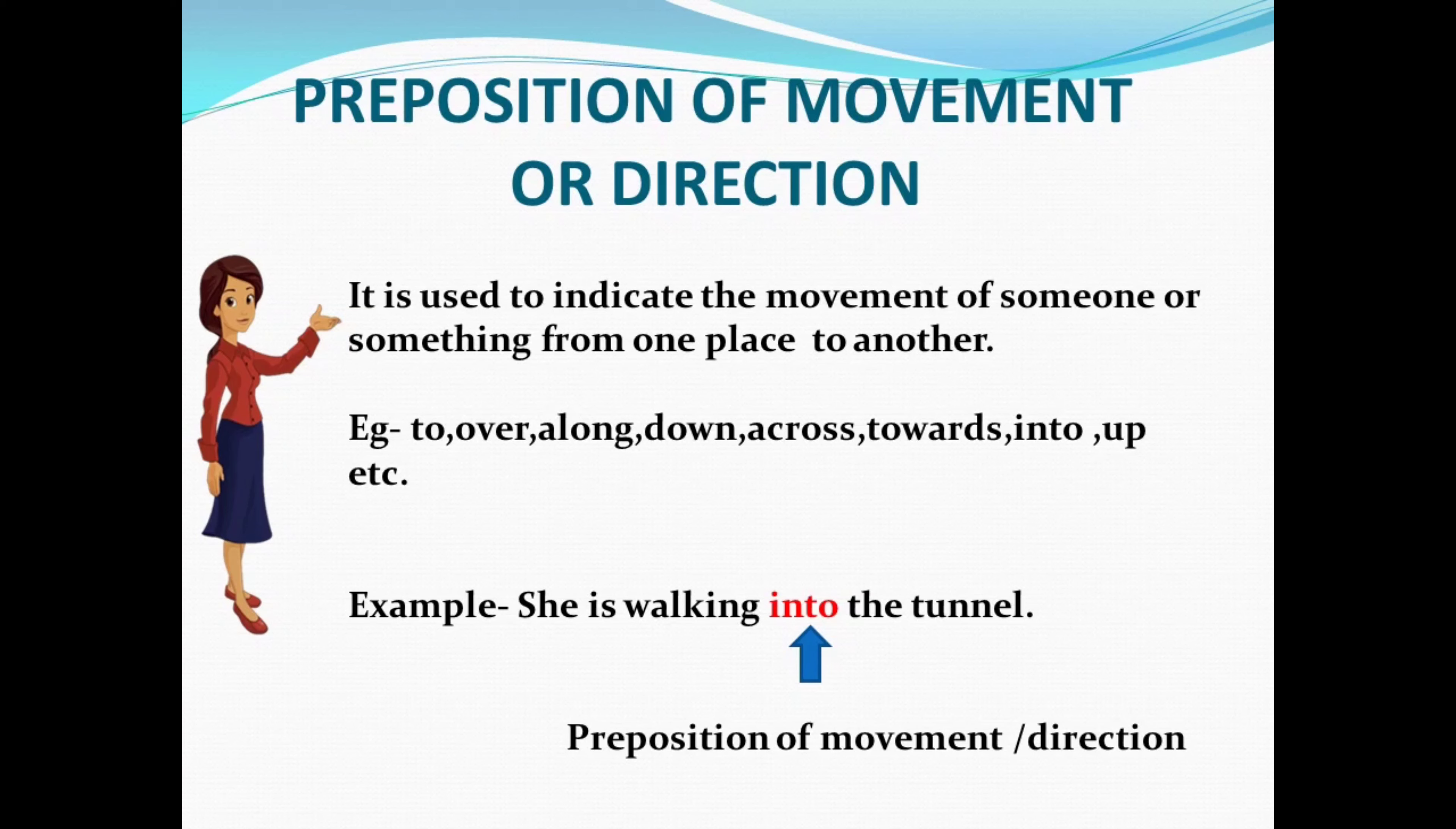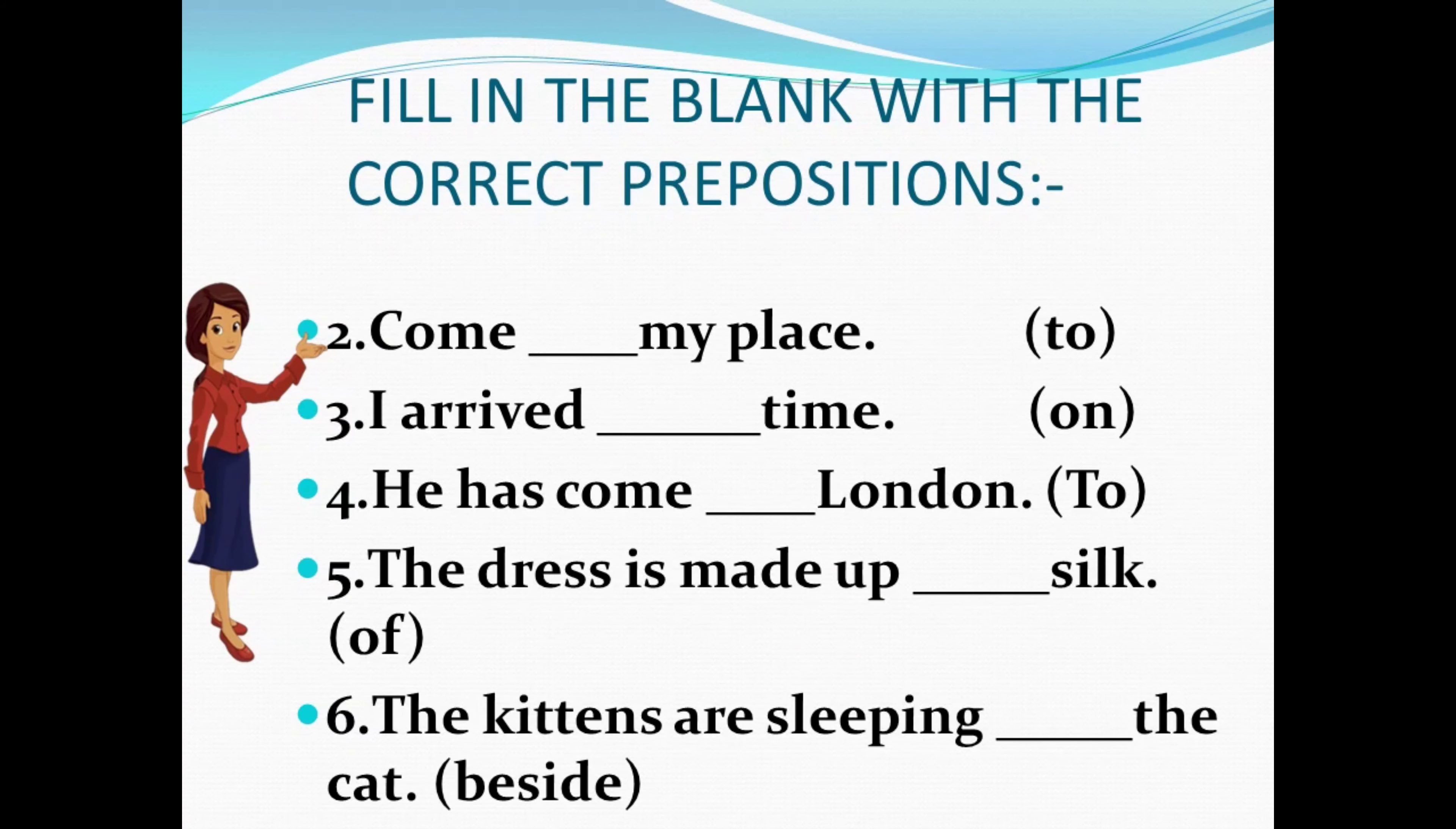So here we come to the last revision, that is fill in the blanks with the correct preposition. 'She is senior ___ me.' The correct answer would be 'to' - she is senior to me. Number two: 'Come ___ my place' - come to my place. Number three: 'I arrived ___ time' - I arrived on time. Number four: 'He has come ___ London' - to London. 'The dress is made up ___ silk' - of silk. And last one: 'The kittens are sleeping ___ the cat' - beside the cat.